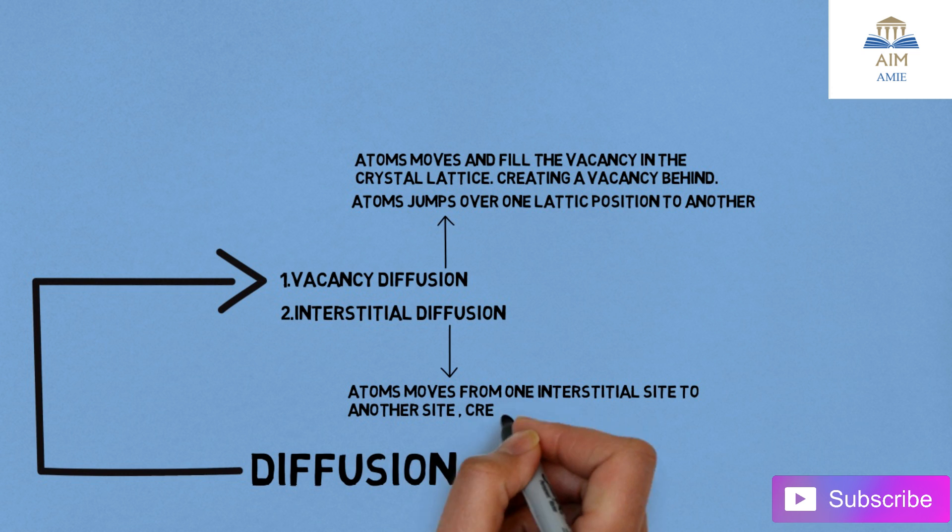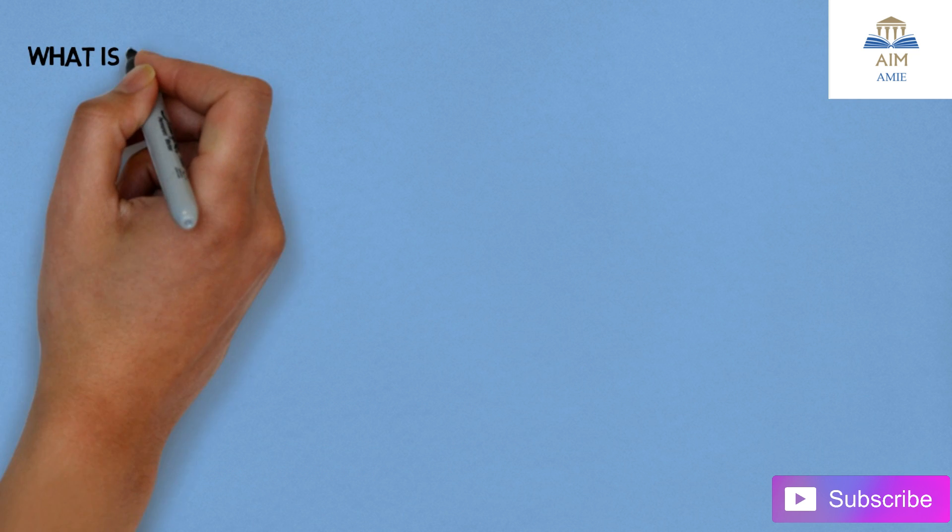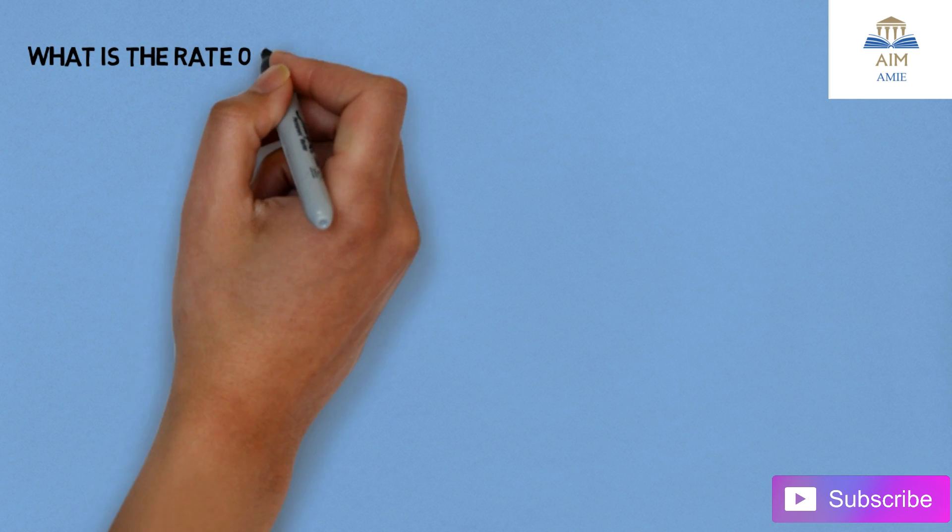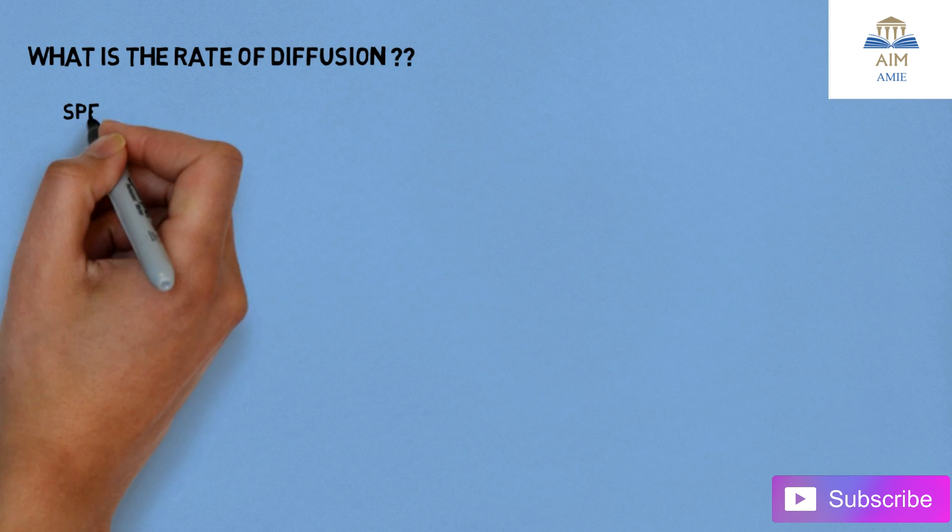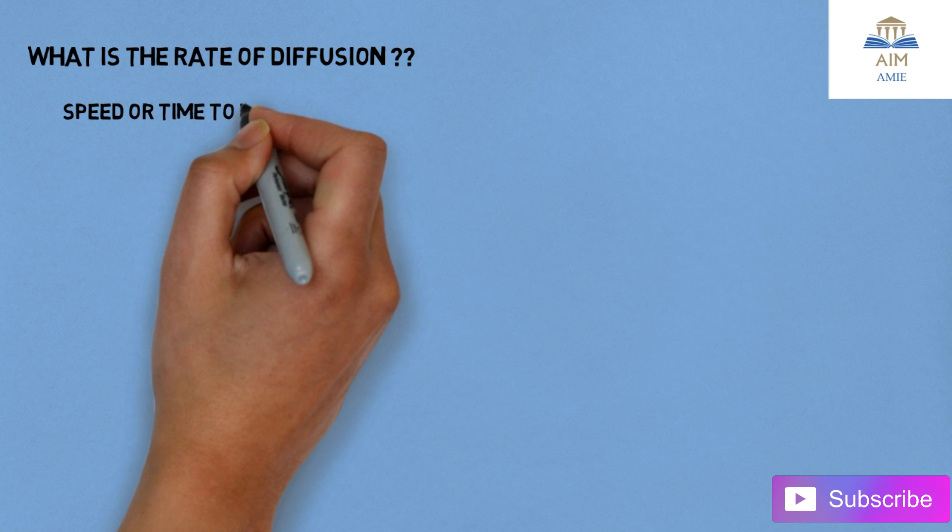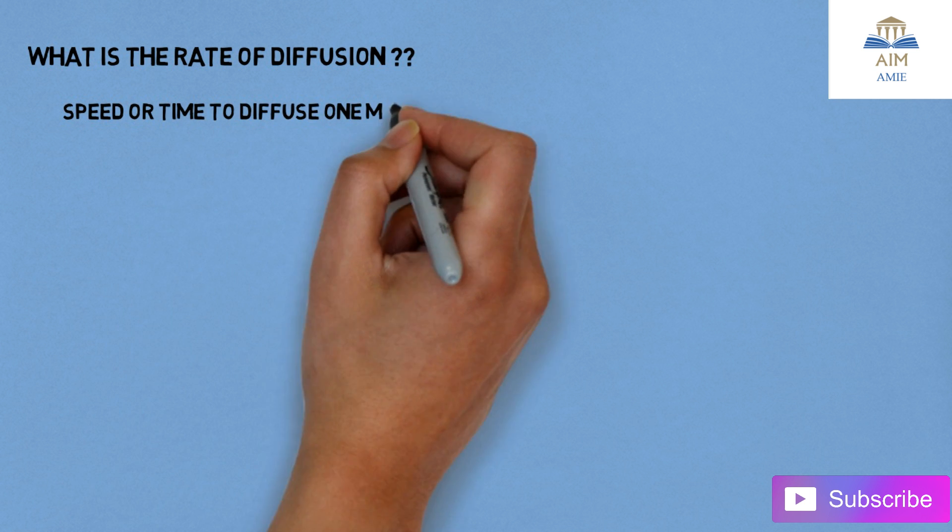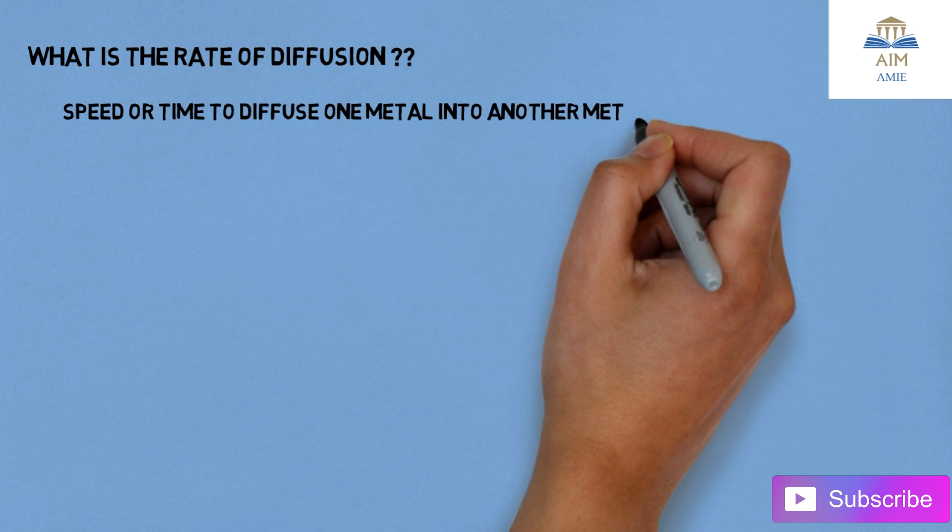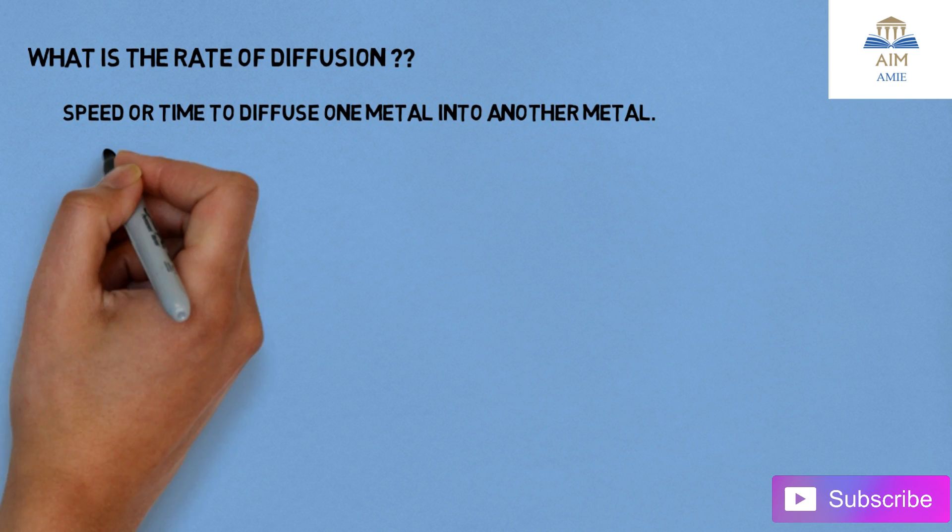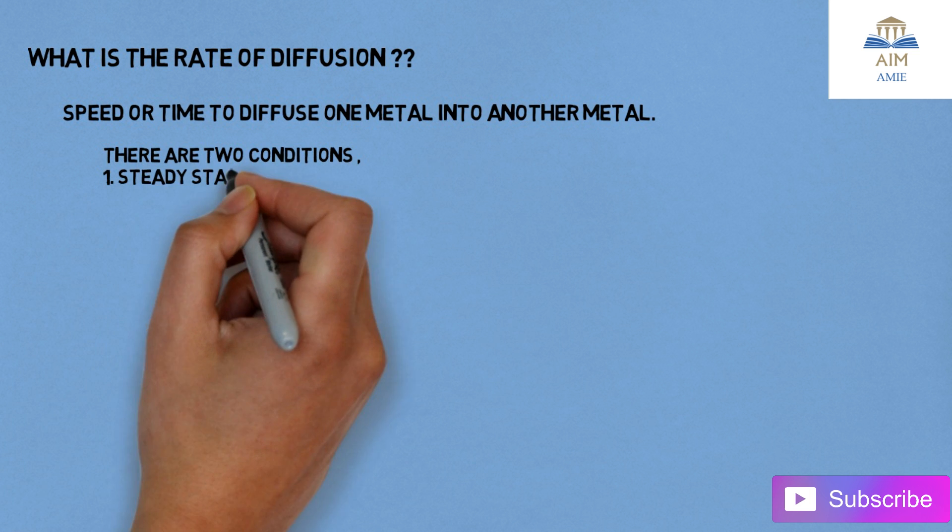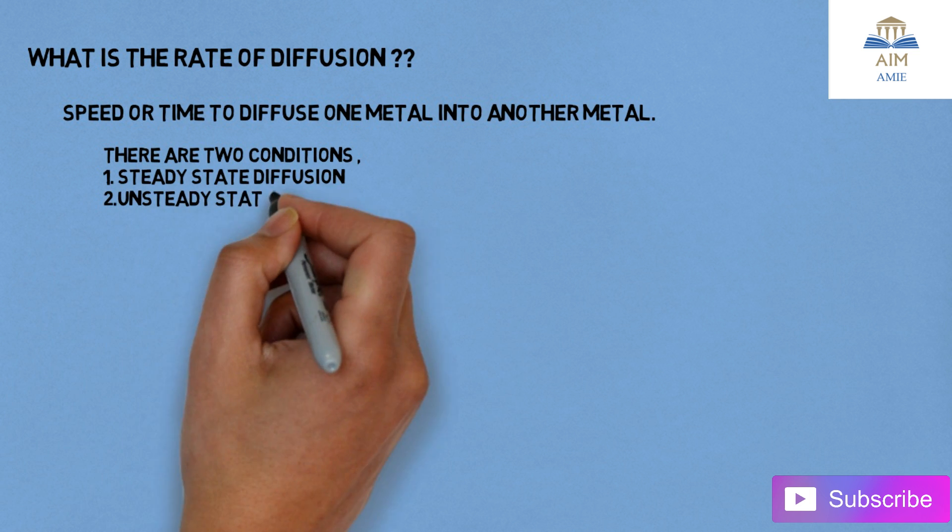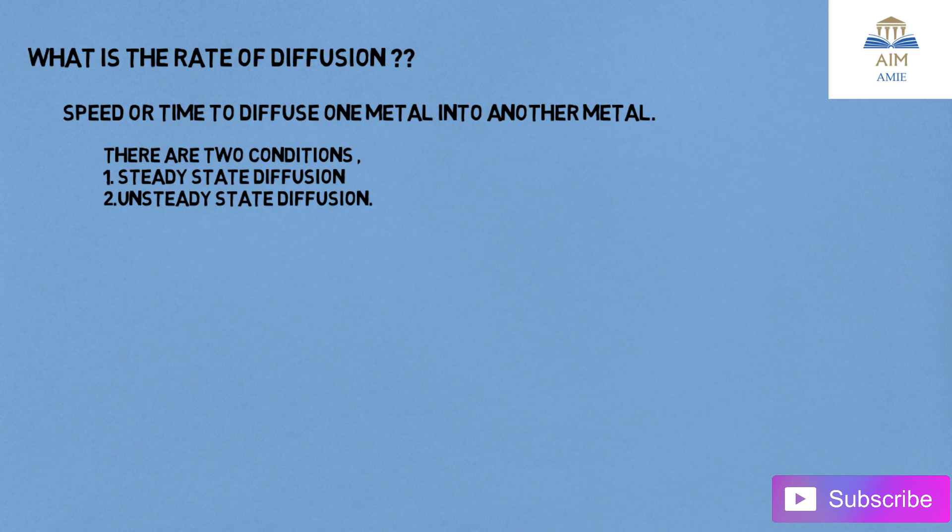What is the rate of diffusion? The speed and how much time to diffuse one metal into another metal. There are two conditions: the first one is steady state diffusion and second one is unsteady state diffusion. We will be covering these two types and Fick's law in the next video.